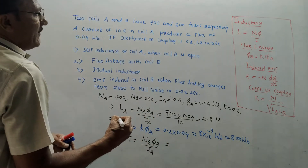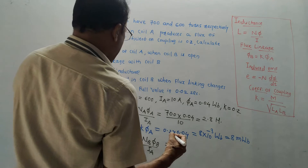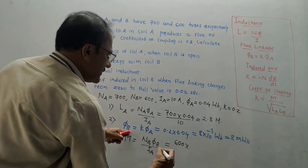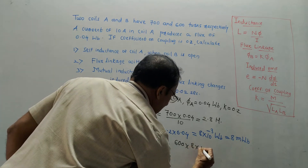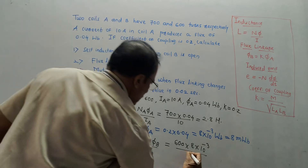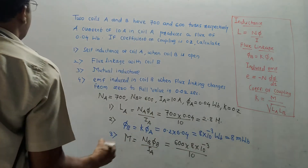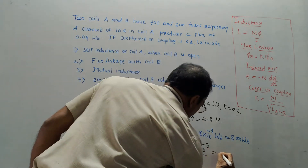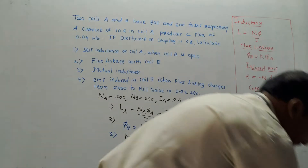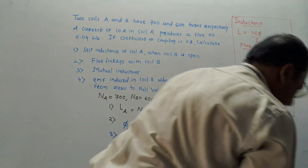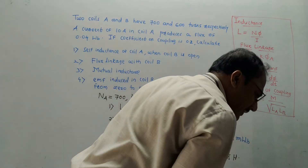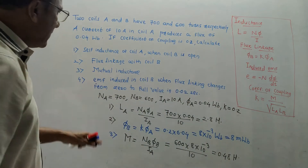Substituting the values: NB = 600, phi_B = 8 × 10⁻³ (calculated in the previous step), IA = 10 A. So M = 600 × 8 × 10⁻³ / 10 = 0.48 Henry. Since it is inductance, its unit is Henry.